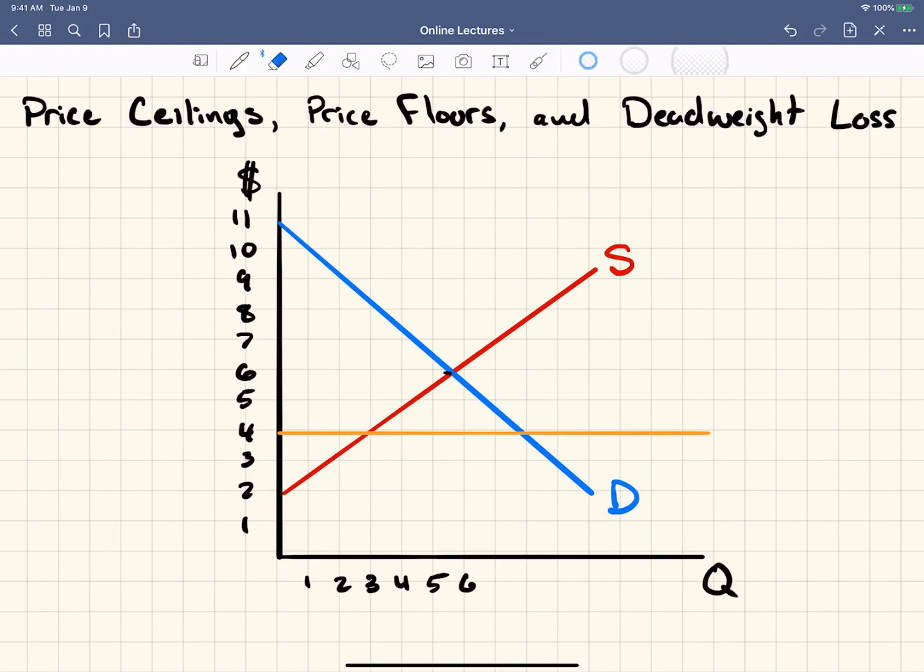Think about it for a minute. We've got demand way over here at this quantity. We've got supply way back here at this quantity. So what's going to happen is the gap between these two points is a shortage, and this shortage is caused because this price is so low.